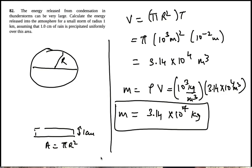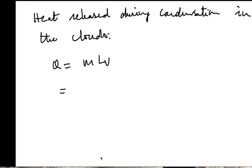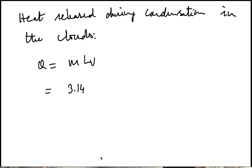And so let's add a page. Heat released during condensation in the clouds is mass of condensation times the latent heat of vaporization. And the mass of water that was condensed was 3.14 times 10 to the 7 kg. Well, let's comment on this.